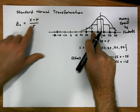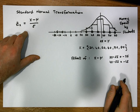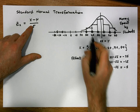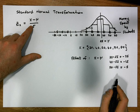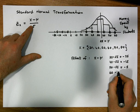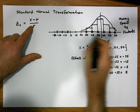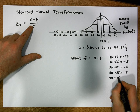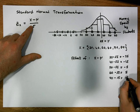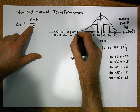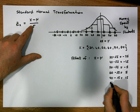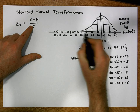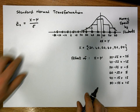The value 50 minus 55 is taken to minus 5. Then 60 minus 55 goes to positive 5, so 60 is taken to positive 5. And 70 minus 55 gives 15, so 70 is taken to 15. Finally, 80 minus 55 goes to 25, so 80 is taken to 25.